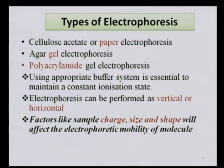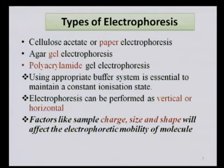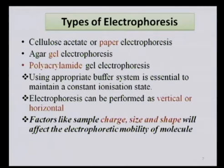There are three major types of electrophoresis: paper electrophoresis, gel electrophoresis, and within gel electrophoresis there are two variants — native gel electrophoresis and SDS-PAGE. Irrespective of type, a buffer system is essential to maintain the ionization state of charged molecules. Electrophoresis can be performed in two orientations: vertical electrophoresis and horizontal electrophoresis.